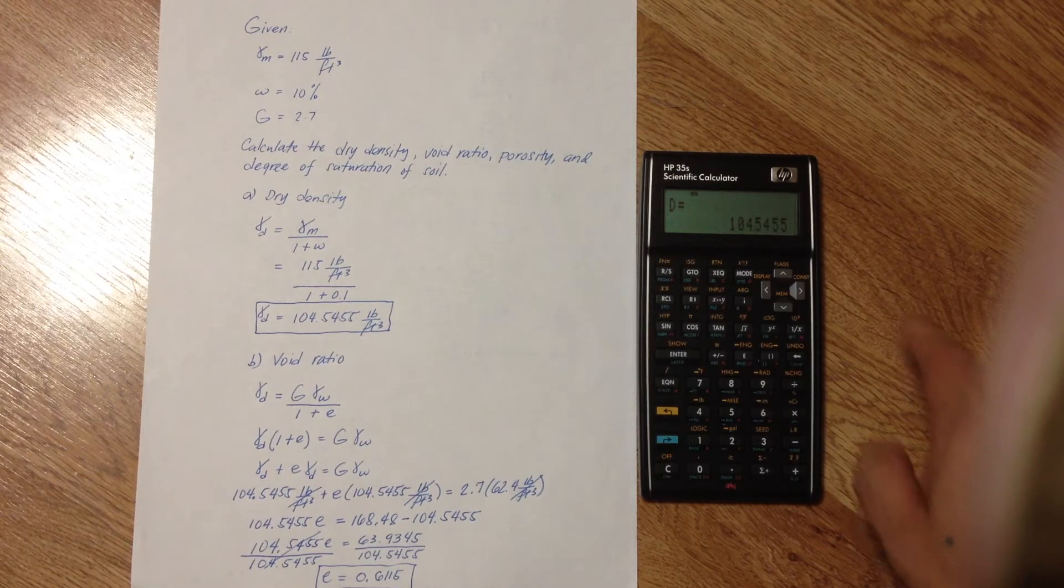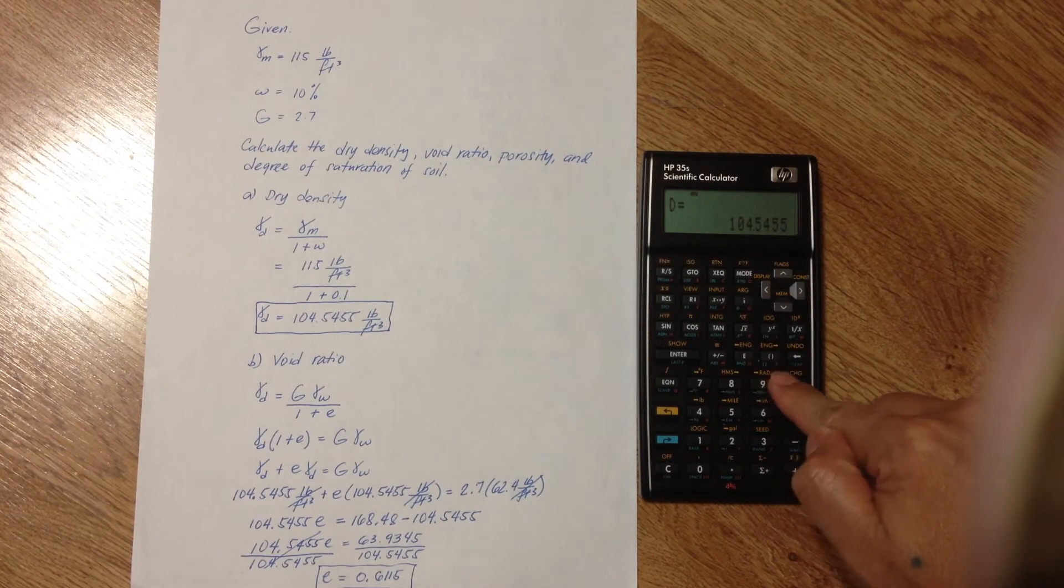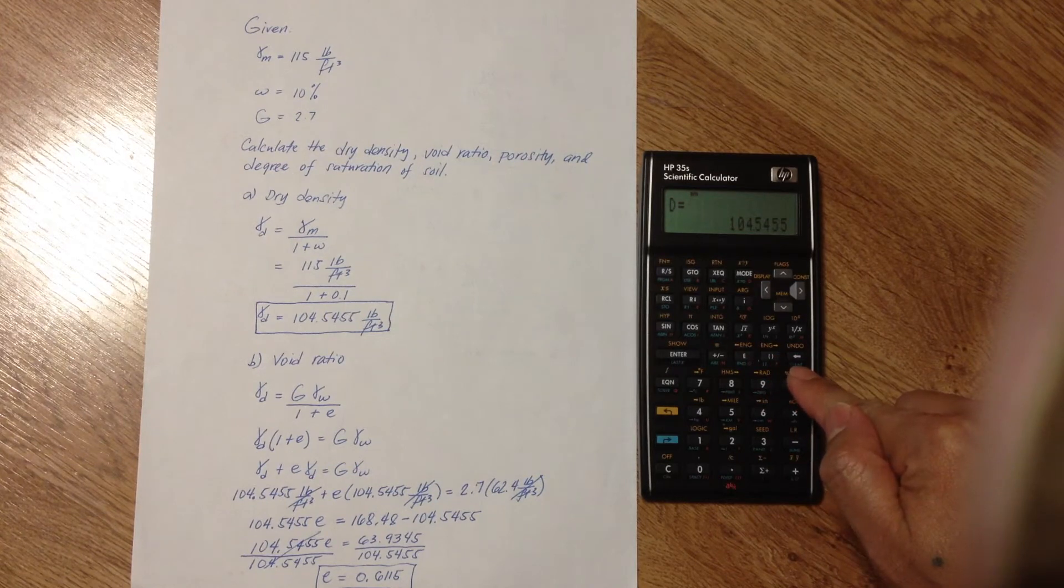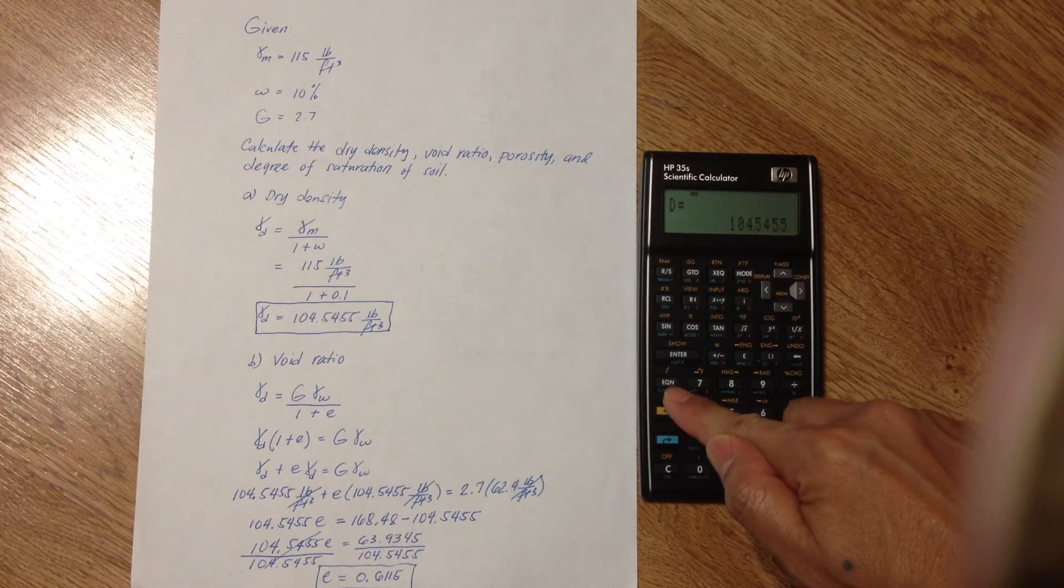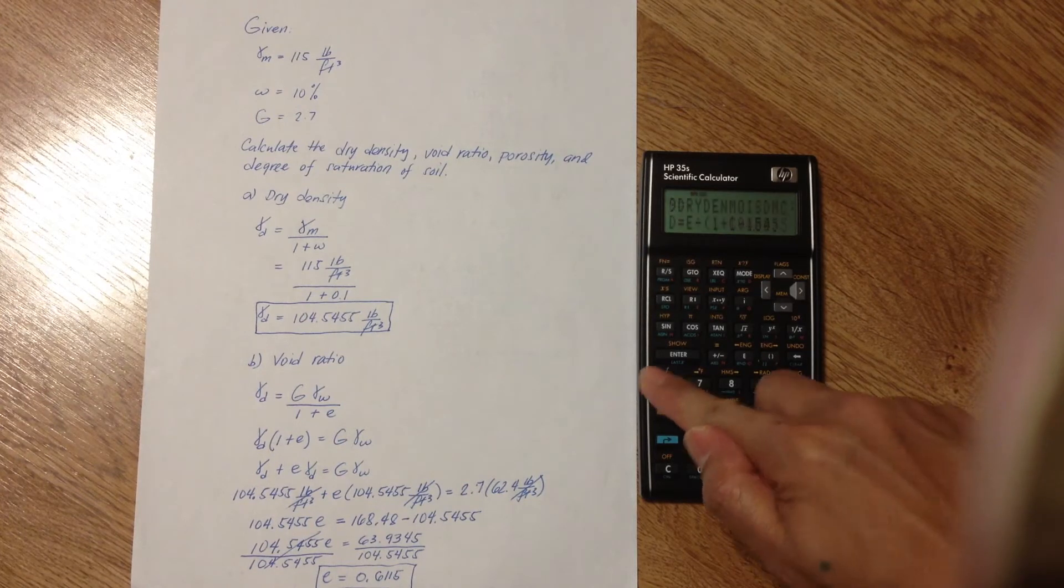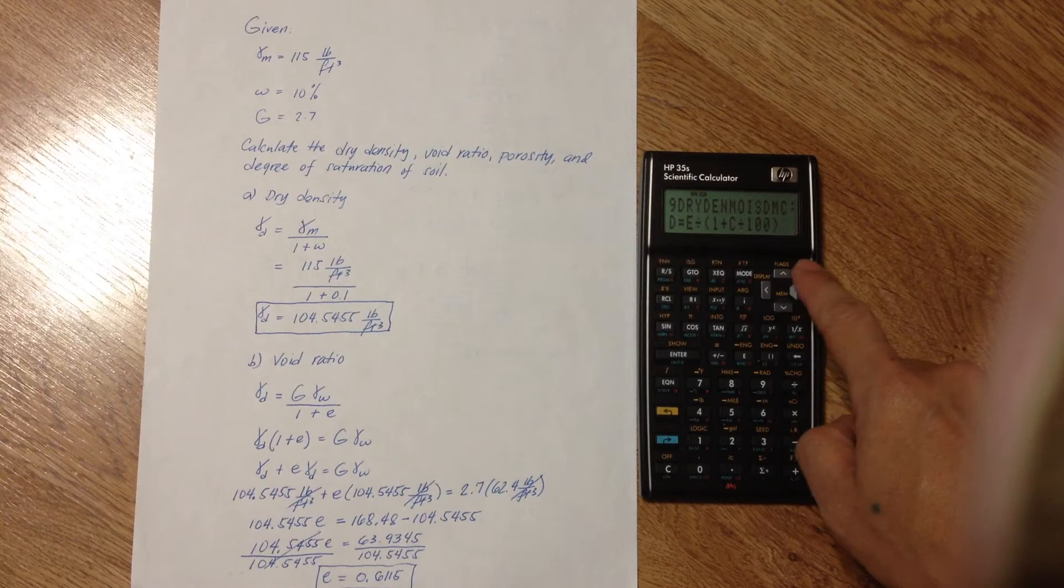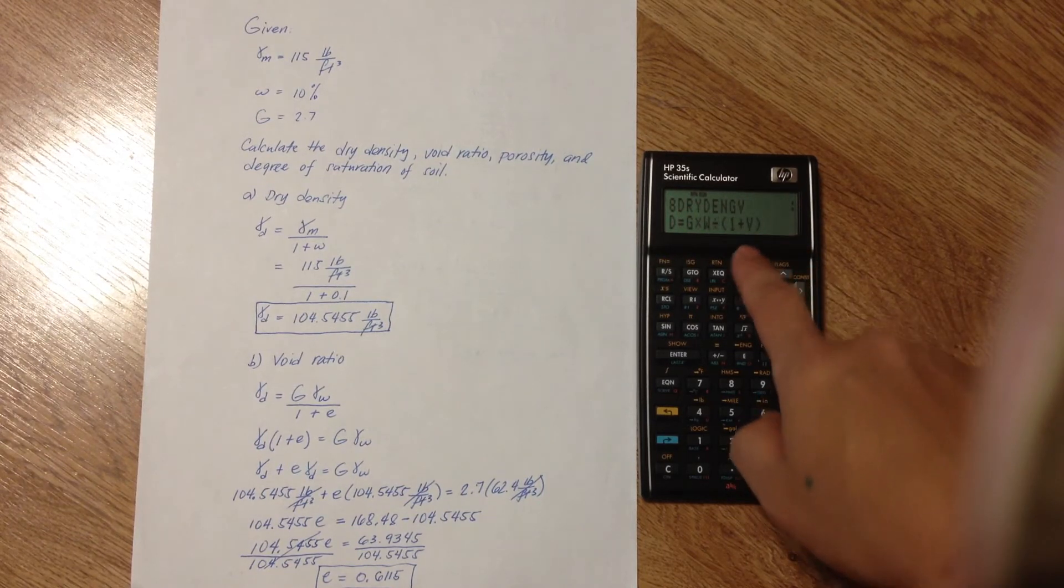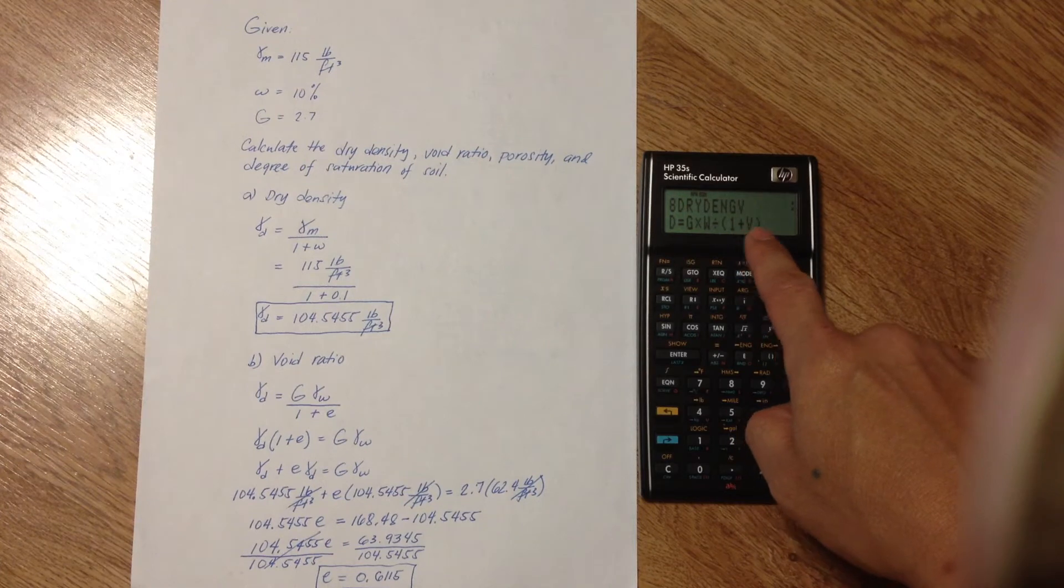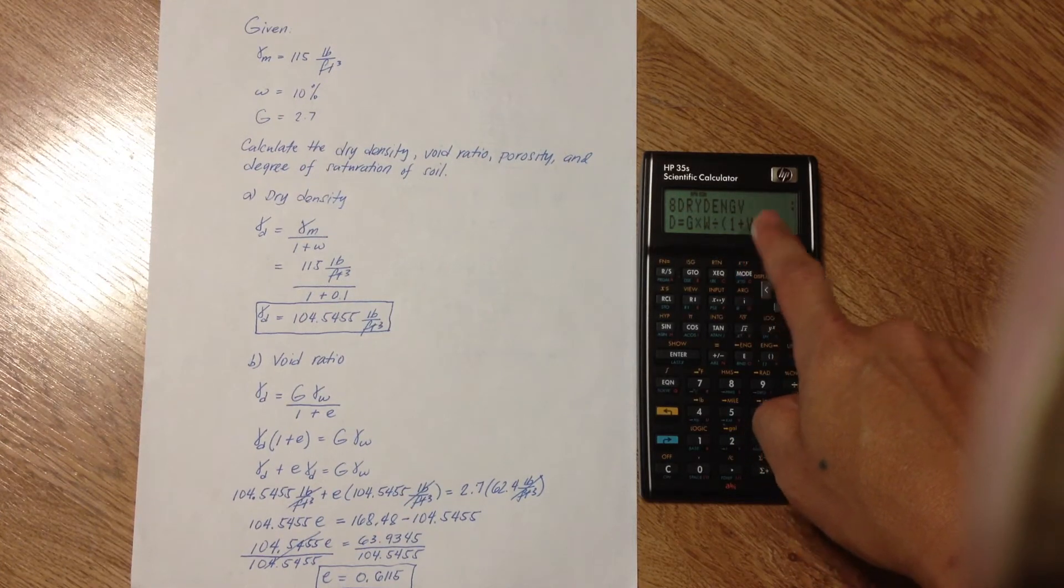Next, for the void ratio, we use equation number 8. Go back to the equation list by pressing the EQN button right here, and then go to equation number 8.